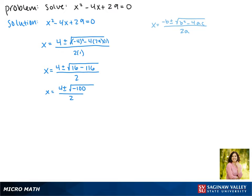We break up the square root of -100 into the square root of 100 times the square root of -1.